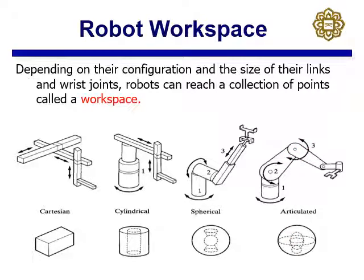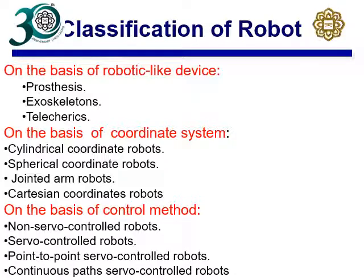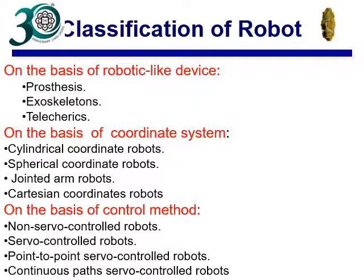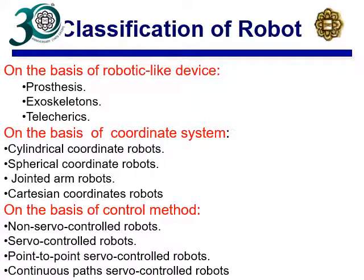Now, the classification of robots. There are various ways to classify robots. You can classify them based on how they look — for example, prosthetics and exoskeletons. An exoskeleton is similar to what you see in the Iron Man movie. Prosthetics are used by amputees for their limbs. On the basis of coordinate system, you have cylindrical, spherical, joint-arm, or Cartesian robots.